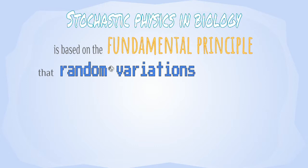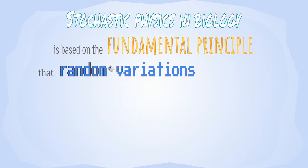Stochastic physics in biology is based on the fundamental principle that random variations in heat at the molecular level make standard mathematical solutions invalid while working on the order of mere dozens to hundreds of molecules, like in a cell. This randomness is termed stochasticity.